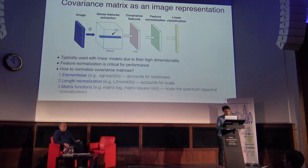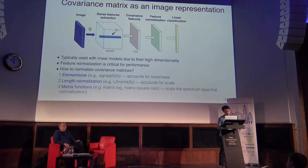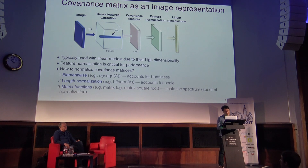The first is element-wise signed square root normalization, which has been widely used for visual bag-of-words models and accounts for the burden of dominant features. The second normalization is L2-normalization, which divides the representation by the norm of the feature, ensuring the representation is robust to the scale of the features. The third normalization is the matrix function — for example, the matrix logarithm or the matrix square root — and this matrix function has the effect of scaling down the spectrum, so we call it spectral normalization. I will show you why this is a reasonable thing to do in the later slides.